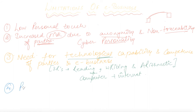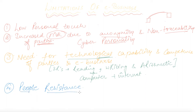Coming to the next limitation: very few people have technological or technical knowledge, and that is why people show resistance toward e-business. Those who are illiterate, or even those who are literate, often have a little fear about whether e-business activities will work correctly. There are also chances of hacking, so if one has to make payment electronically, they will resist — that is why resistance to e-business is always there.